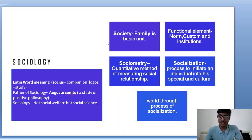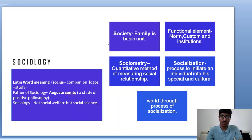We have two terms: sociometry and socialization. Sociometry is a term for measuring social relationships in a particular society. The process to initiate an individual into the cultural world is known as socialization, and the process of socialization continues throughout the life of an individual.